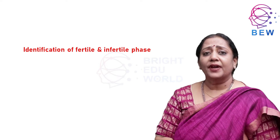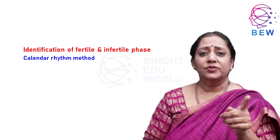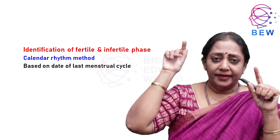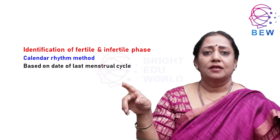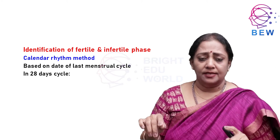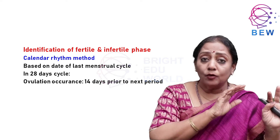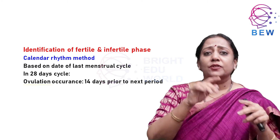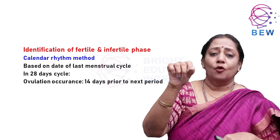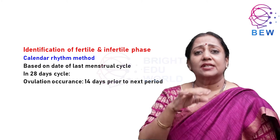The rhythm method can be applied using calendar rhythm, which is based on the date of the last menstrual period. For example, if a woman had a 28-day cycle, then 14 days prior to the next expected period was the day of ovulation. We go by the calendar to suggest the timing of ovulation.